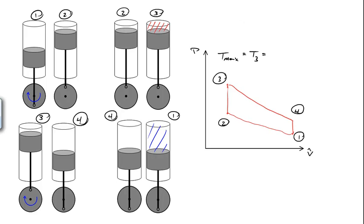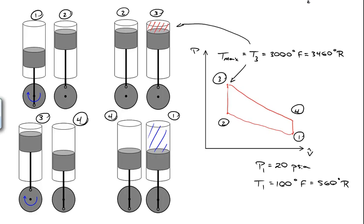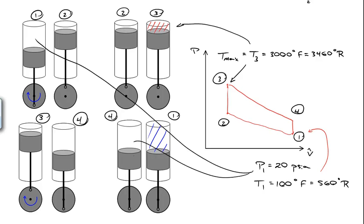A couple of things we know from the problem: the maximum temperature occurs at point three, when the piston is all the way up and the gasoline burns. The maximum temperature given is 3000 degrees Fahrenheit, or 3460 Rankine. We also know the inlet conditions — the pressure at point one is 20 PSI, and the temperature is 100 degrees Fahrenheit, or 560 Rankine. So we know both the pressure and temperature at point one.